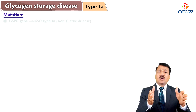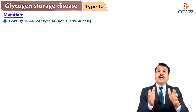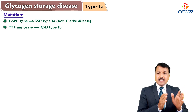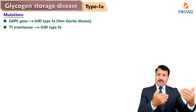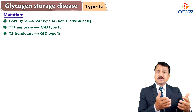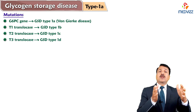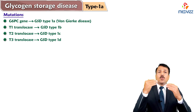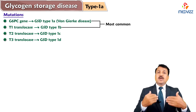If there is a mutation in the G6PC gene coding for glucose-6-phosphatase enzyme, that gives rise to Glycogen Storage Disease Type 1A, called Von Gierke Disease. If there is a mutation in the gene coding for T1-translocase, that gives rise to GSD Type 1B. Although very rare, a mutation in T2-translocase gives rise to GSD Type 1C, and a mutation in T3-translocase gives rise to GSD Type 1D. So there are four types: 1A, 1B, 1C, and 1D — with 1A and 1B being the most commonly mentioned.